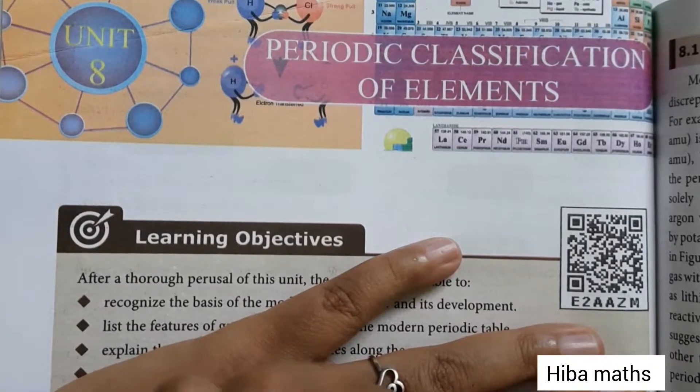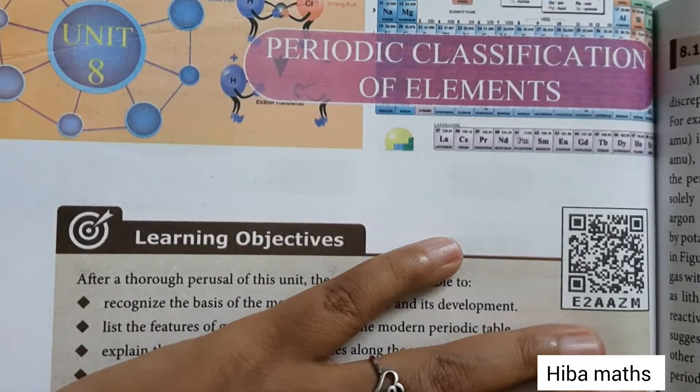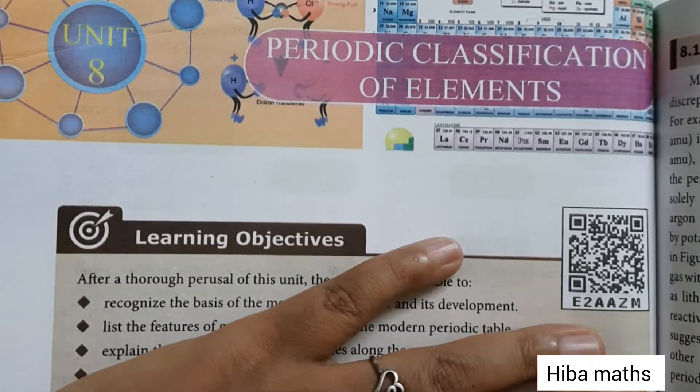Hello students, welcome to Hiba Maths study time. 10th standard science, Unit 8: Periodic Classification of Elements. Book questions and answers. Choose the best answer.